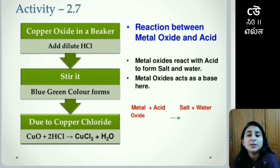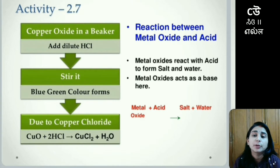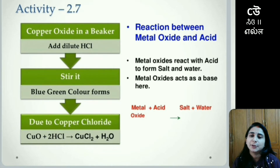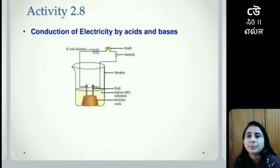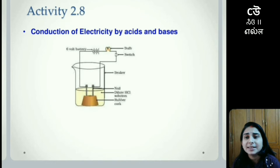CuO, that is copper oxide, when it combines with hydrochloric acid HCl, the product is going to be copper chloride CuCl₂ and some amount of water. Activity number 2.8 is about conduction of electricity with the help of acids and bases.